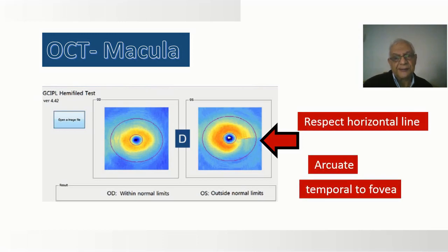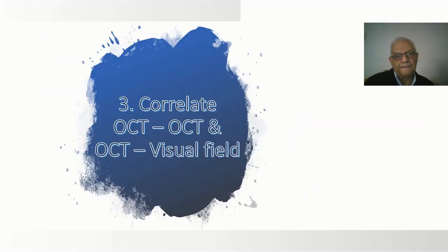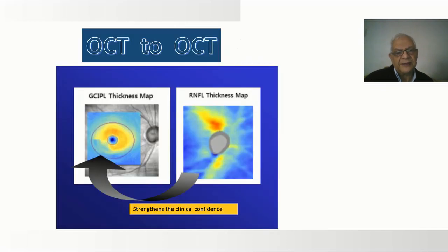For the macular ganglion cells, lesions that respect the horizontal line, lesions that are arcuate, and lesions that are temporal to the fovea all point to the possibility of glaucoma. Lastly, you need to correlate changes inside the OCT printout and also changes between OCT and visual field. If changes in the ganglion cells of the macula correspond with changes around the disc, we are more confident in the diagnosis.